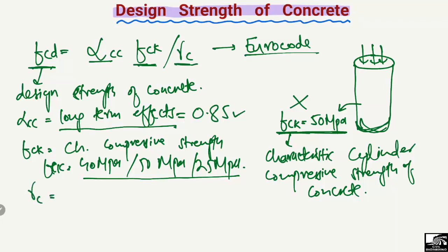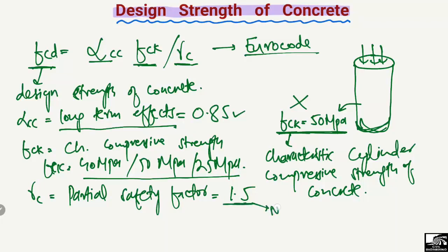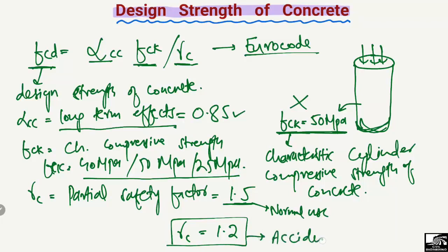The last factor is γc, known as the partial safety factor for concrete. It is assumed to be 1.5 for normal use. However, if you have accidental cases — for example, impact load, earthquake load, or fire load — then you can take this value as 1.2. These are the three factors involved in the design strength of concrete.